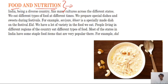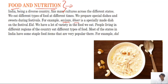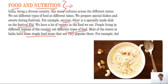Let's start reading the first paragraph: India, being a diverse country, has many cultures across different states. We eat different types of food at different times. We prepare special dishes and sweets during festivals. We have a lot of variety in the food we eat. People living in different regions of the country eat different types of food.